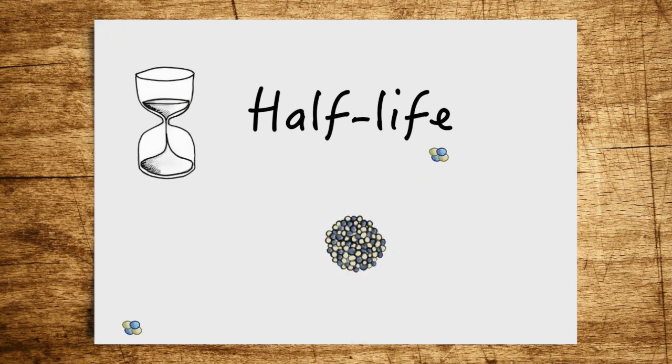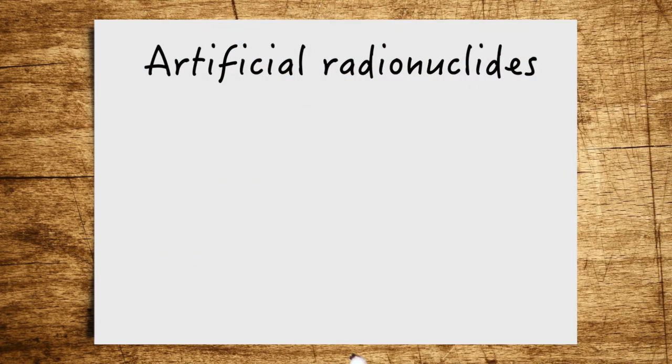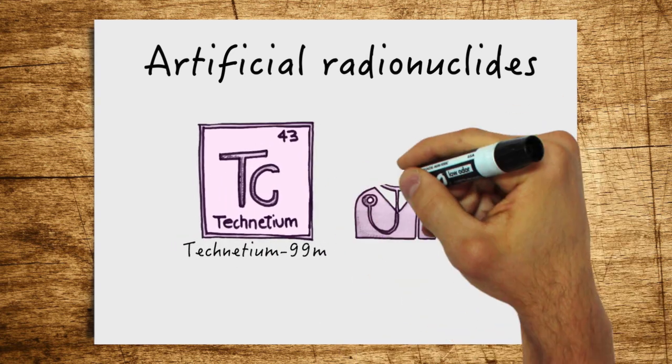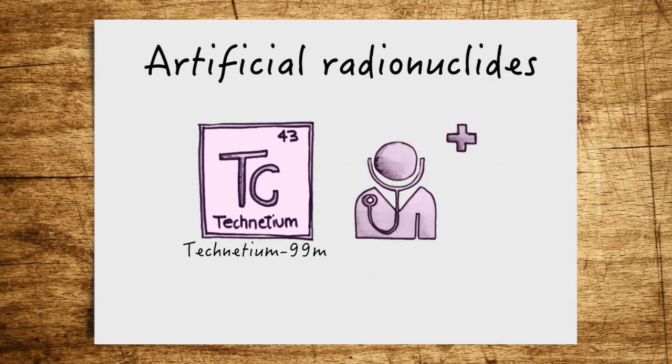Finally, the radionuclides can also be grouped according to their origin. You can have artificial radionuclides that arise during certain technical processes. Among these are, for example, cesium-137, which is formed upon nuclear fission in nuclear power plants, or technetium-99m, which is generated for medical applications by radiation.